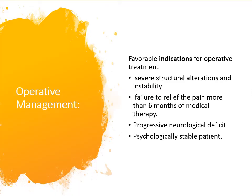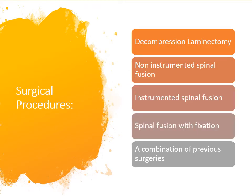Operative treatment is indicated when there is severe instability, failure to relieve pain after more than six months of medical therapy, or progressive neurological deficit — but the patient must be psychologically stable. The treatment options are decompressive surgery, non-instrumental fusion, instrumental spinal fusion, or spinal fusion with fixation, or any combination of the previous ones.